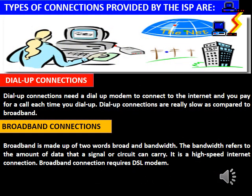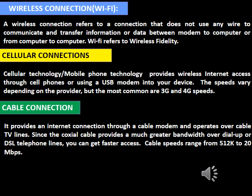There are many types of connections provided by ISPs. A dial-up connection needs a dial-up modem, requires paying for the call, and is slow compared to other connections. A broadband connection is a high-speed internet connection — 'broadband' comes from 'broad bandwidth,' where bandwidth refers to the amount of data a signal or circuit can carry; it requires a DSL modem. A wireless connection, known as Wi-Fi (Wireless Fidelity), does not use any wire to transfer data between the modem and the computer.